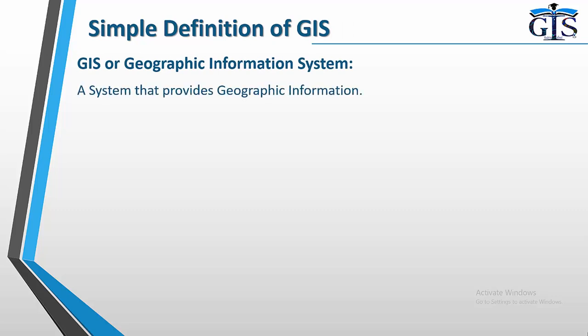Now let's see the simple definition of GIS. If you search on the internet about the definition of GIS, you will get many types of definitions, such as: it means gathering, managing and manipulating databases; it is the combination of spatial and non-spatial database; it is the combination of hardware, software and many more. But the simple definition of GIS already exists inside this term.